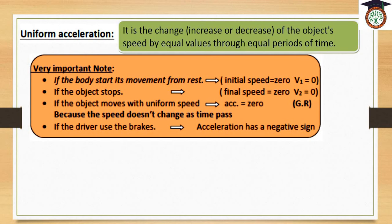We have here very important notes. If the body starts its movement from rest, in this case the initial speed equals 0. If the object stops, the final speed equals 0 (V2 = 0). If the object moves with uniform speed, acceleration equals 0 — there is no acceleration because the speed doesn't change as the time passes. If the driver uses brakes, in this case acceleration has a negative sign.